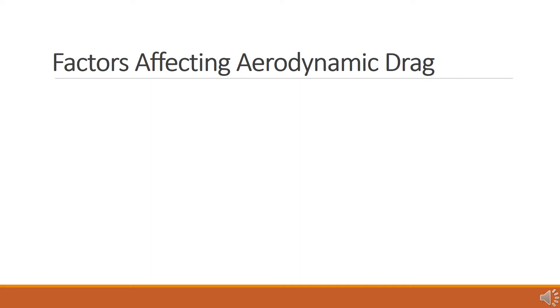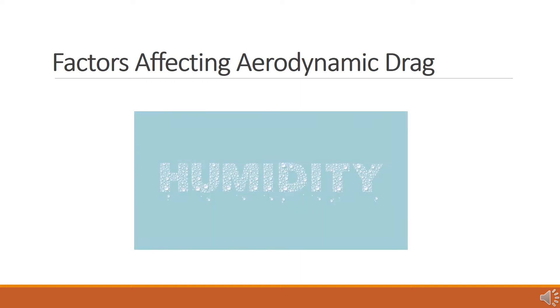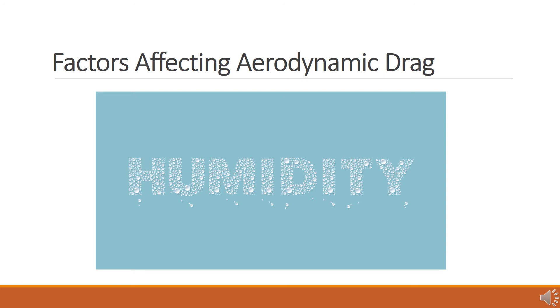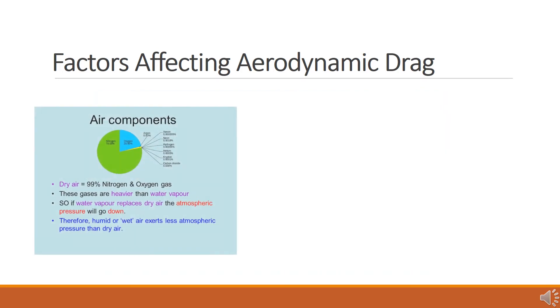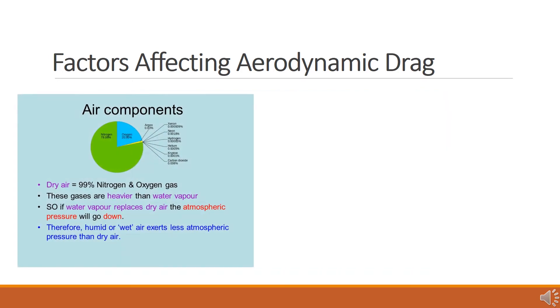The density of air varies with a number of air properties, such as humidity, altitude, and temperature. Humidity equates to the amount of moisture contained in the air. Air with a high humidity contains a large number of molecules of water suspended in it, in addition to the other particles that normally make up the atmosphere.